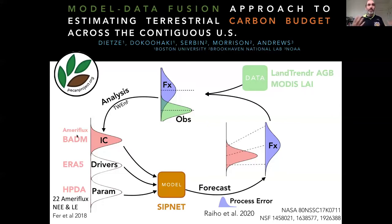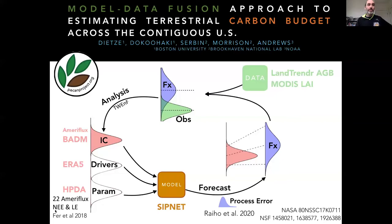We're relying on ensemble-based methods to make these forecasts probabilistically and then combine them with data. We start with probability distributions for understanding of the initial state of the system. We drive the models with an ensemble reanalysis product, the AR5 product, so we have uncertainty in the drivers and initial conditions. We also have uncertainty in the model parameters generated from a hierarchical parameter data simulation over 22 AmeriFlux sites, where we calibrated the model using net ecosystem exchange carbon flux data and latent energy exchange water flux data.